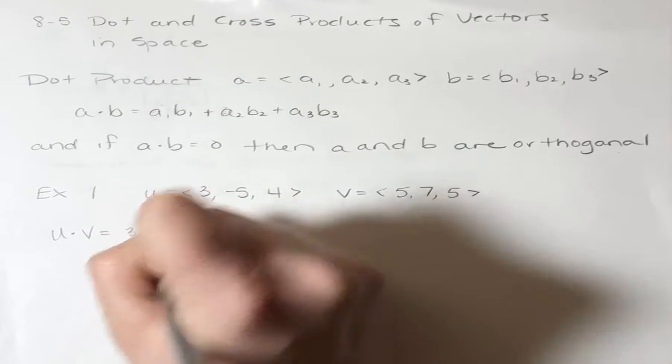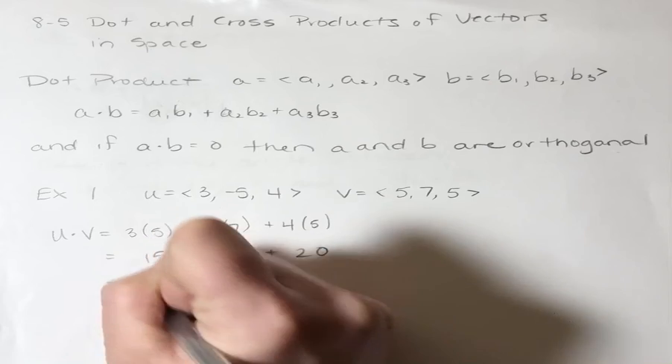So the dot product of u and v, it's a scalar. So I take 3 times 5 plus negative 5 times 7 plus 4 times 5. So 15 plus negative 35 plus 20, which is zero. So there's my dot product.